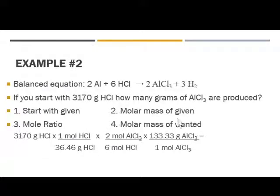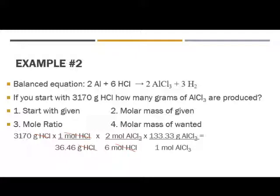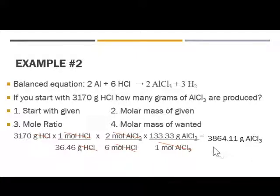But we're not quite done. Now we need to add in the molar mass of the wanted because we need to get to grams. The units we have at the top are now moles of aluminum chloride, and the molar mass of aluminum chloride is 133.3. Go ahead and check units: grams of hydrochloric acid cancel, moles of hydrochloric acid cancel — and hopefully you guys are seeing why you need to write the molecular formula in your units — then moles of aluminum chloride cancel, and we are left with grams of aluminum chloride. Anything on the bottom you will divide by, anything on the top you multiply. You will get 3,864.11 grams of aluminum chloride.